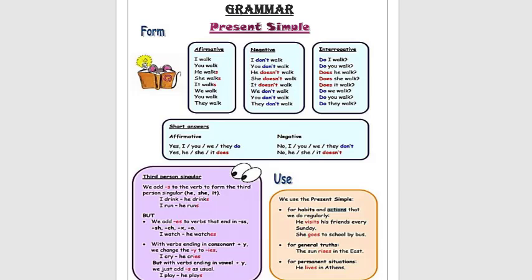The second rule: with verbs ending in a consonant plus Y, we change the Y and add IES. Like: I cry, he cries. But with verbs ending in a vowel plus Y, we just add S as usual. Like: I play, he plays.